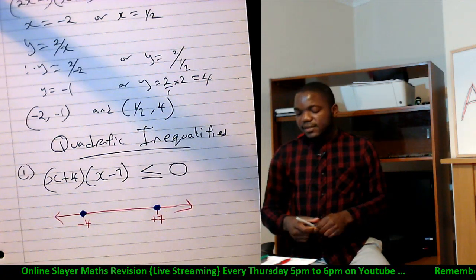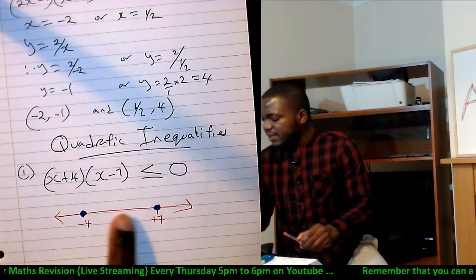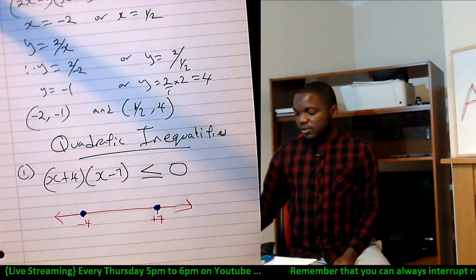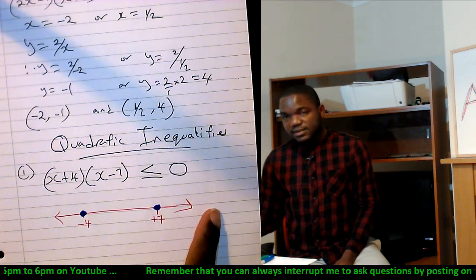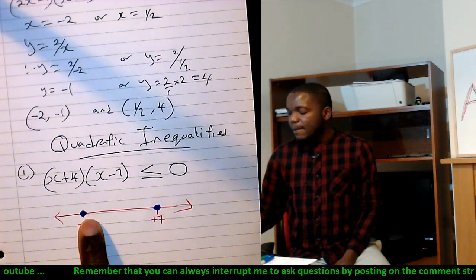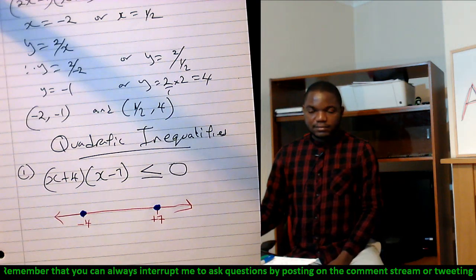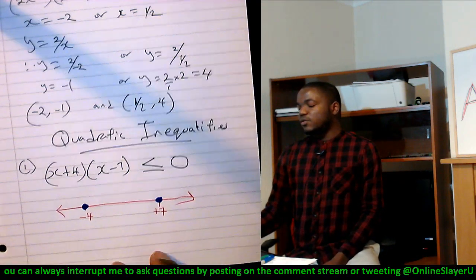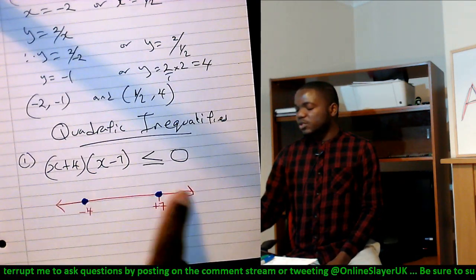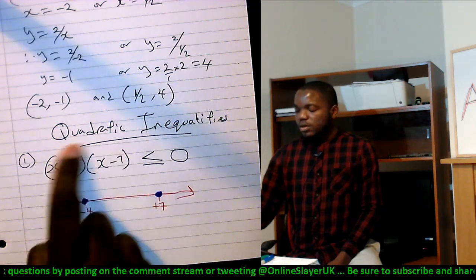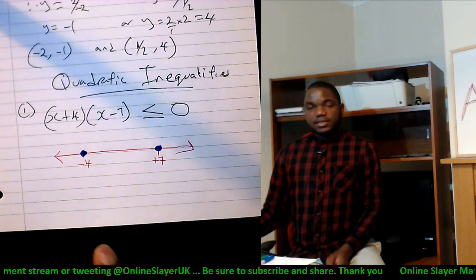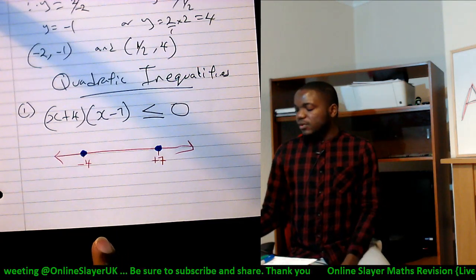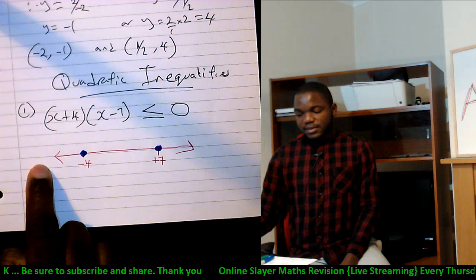On this number line, we've got less than minus 4, we've got greater than 7, and we've got between minus 4 and 7. We want to find out which of these positions, which of these regions, work with this inequality.